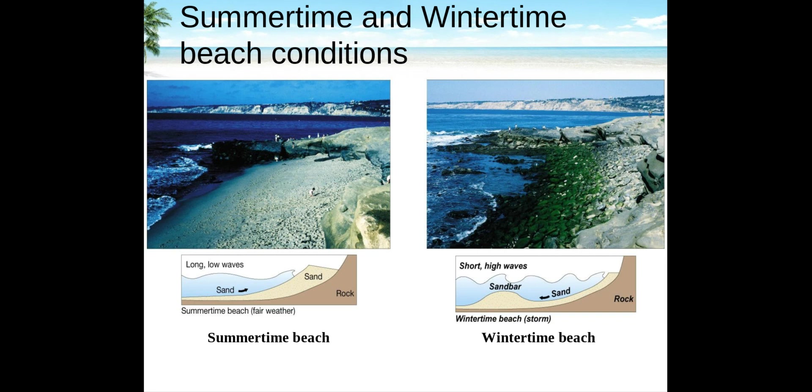A summertime beach has light wave activity: wide sandy berms, steep beach face, swash dominates, and longshore bars are not present — generally milder conditions. A wintertime beach has heavy wave activity: backwash dominates, sediment is moved away from shore, the beach is narrower with a flattened beach face, and longshore bars are present — generally associated with stormy weather.